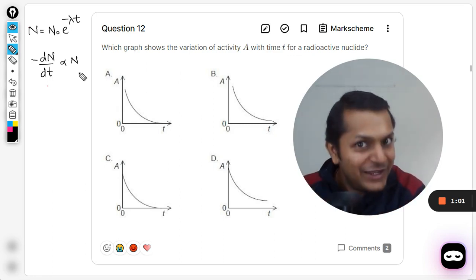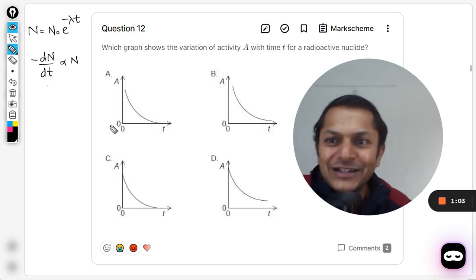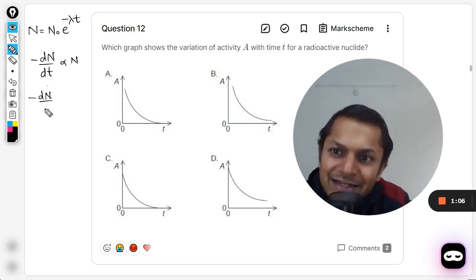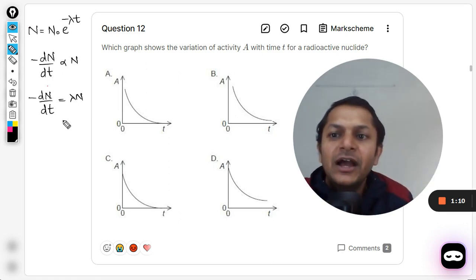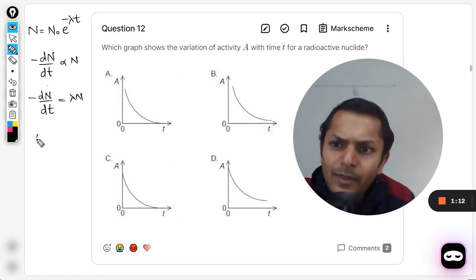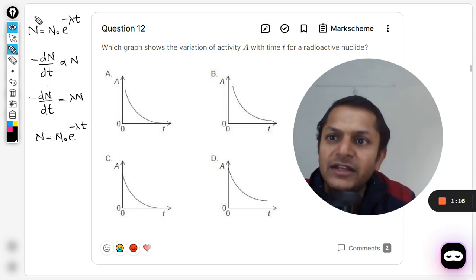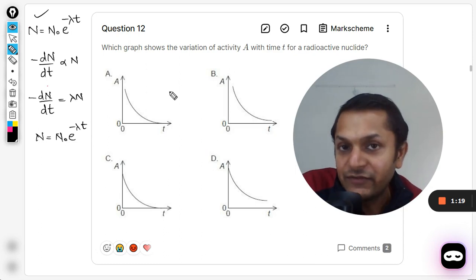Anyways, this can be written as negative dN by dt which is equal to lambda N. On integrating it we get the formula N is equal to N₀ e raised to power minus lambda t, which I have already written here. This is known as radioactive decay law.